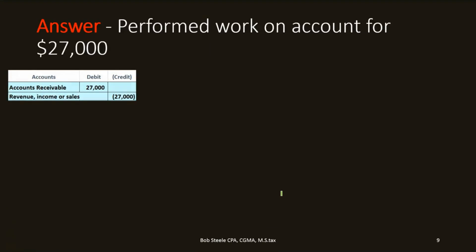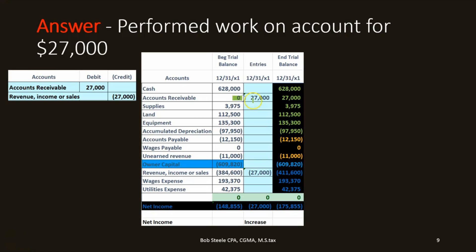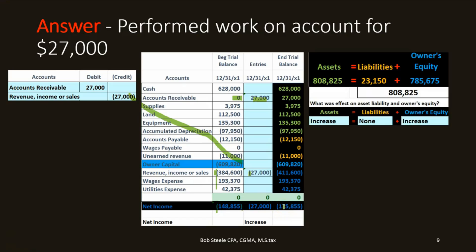The transaction looks the same as the first one: debit receivable going from zero up by $27,000. We get a debit, and a debit makes it go up. The other side is revenue with a credit balance — another credit makes it go up. Net income, calculated as revenue minus expenses, goes up by $27,000. Assets go up because receivables are an asset. No effect on liabilities. Since assets went up with no effect on liabilities, owner's equity must be increasing — net income increased, and net income is part of owner's equity.